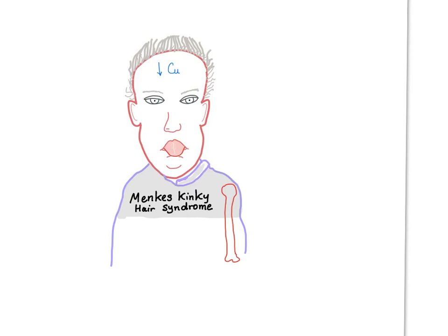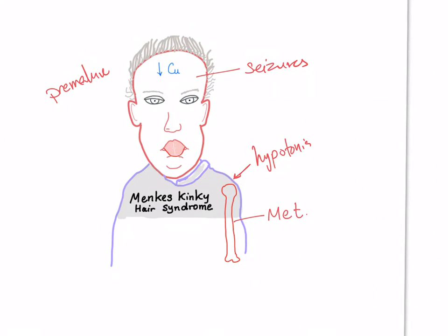The symptoms of Menke's disease include hypotonia — the muscles are very weak. We can also have seizures and metaphyseal widening. We can have premature birth. Of course, we have kinky gray hair that is very brittle. This is very characteristic of Menke's disease.